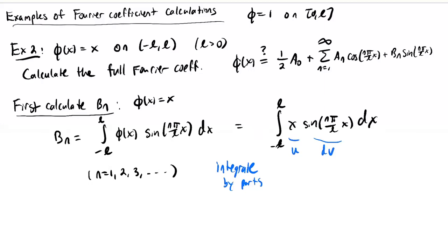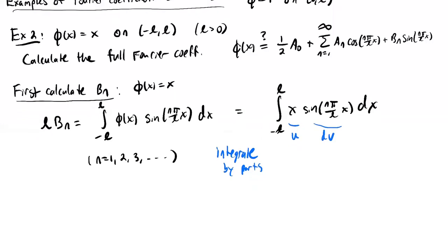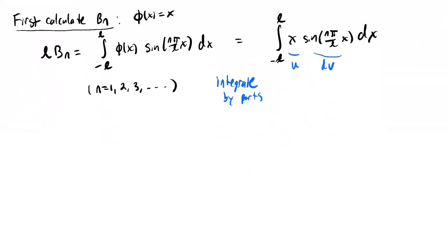I'm going to let x be my u term and the sine term be my dv, so the derivative transfers to x, eliminating it. To simplify notation, I'll multiply everything by L, so L times b_n equals the integral, avoiding writing one over L everywhere. Integration by parts gives: dv is sine(nπ/L · x), so v equals negative L over (nπ) times cosine(nπ/L · x), since the derivative of cosine is minus sine.